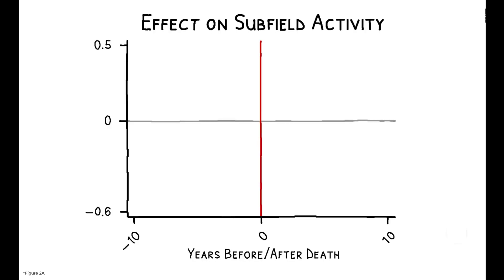So what do the results reveal? This figure shows how research activity in a subfield, as measured by the number of publications, is affected by a star's premature death. There is no discernible effect in the preceding decade, which is consistent with the death being an unanticipated event, but we do see an uptick in activity after the death. Overall, the magnitudes point to a 5.2% increase.